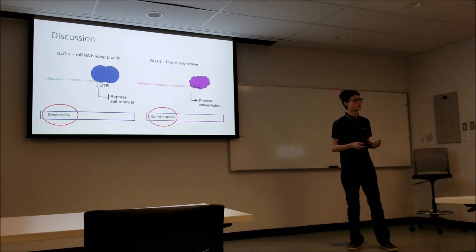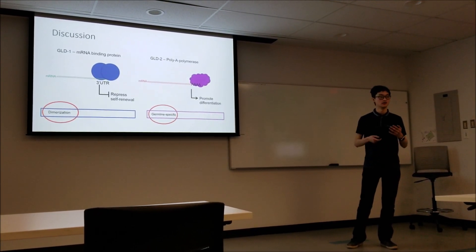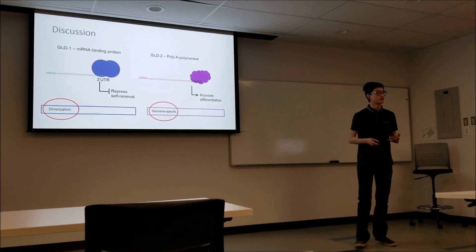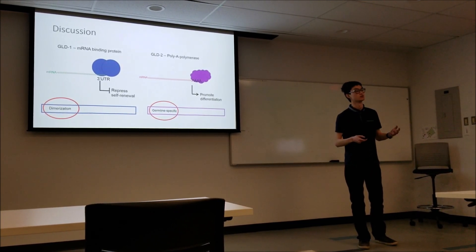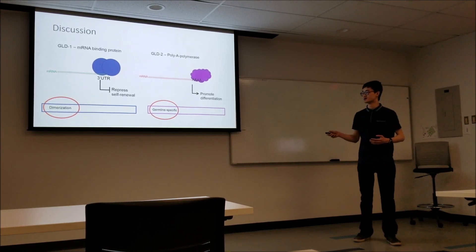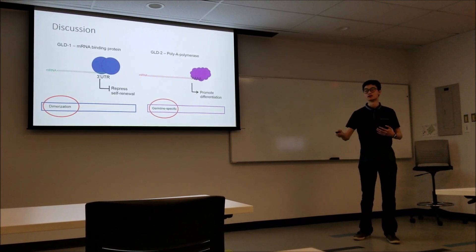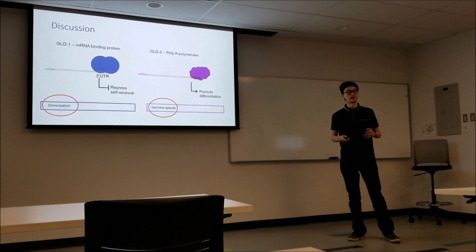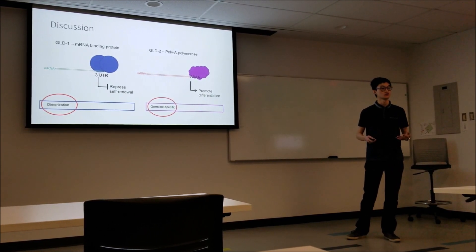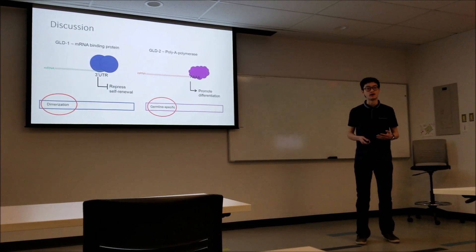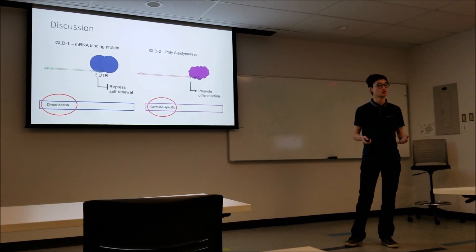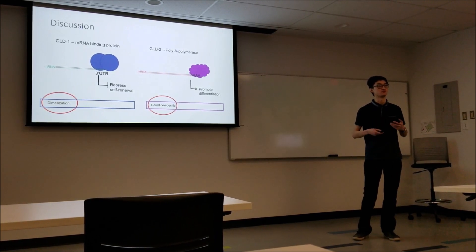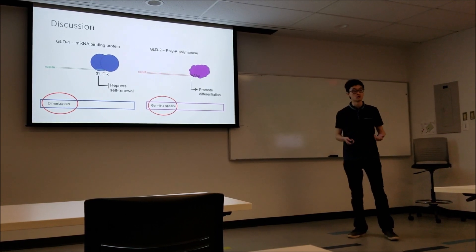For GLD1, GLD1 is actually an mRNA binding protein. It binds mRNAs in the 3' UTR region, and it binds the mRNAs that are important for self-renewal. By binding those and repressing those, it's promoting differentiation. Importantly, GLD1 binds as a dimer. It needs to bind as a dimer in order to function. As you can imagine, if GLP1 is interacting with the dimerization domain, that could be interfering with GLD1's dimerization, which might be affecting its activity. I think that's pretty cool.